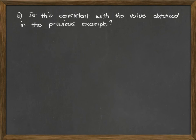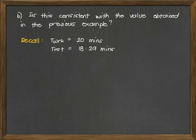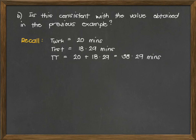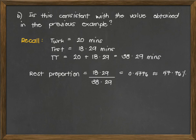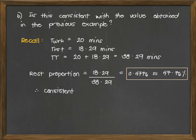For letter B - is this consistent with the value obtained in the previous example? In our previous example, T work is 20 minutes and T rest is 18.29 minutes. Therefore, total time is 20 plus 18.29, or 38.29 minutes. The rest proportion is 18.29 over 38.29, which is also 0.4776 or 47.76%. So it is consistent.